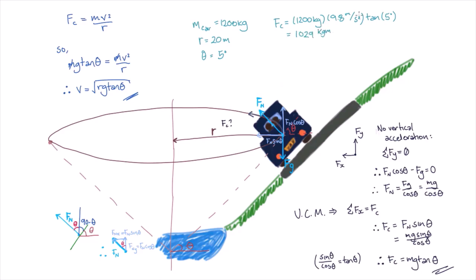The centripetal force is equal to 1029 newtons, and the velocity is equal to 4.1 meters per second, or in a more typical unit for cars, this is equal to 14.9 kilometers per hour.